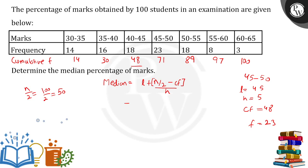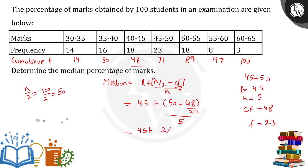Putting the values into the formula: l = 45 (the lower limit of the median class 45 to 50). So: 45 + [(50 − 48) / 23] × 5. Here, cf = 48 is the cumulative frequency of the preceding class, f = 23 is the frequency of the median class, and h = 5 is the class size.